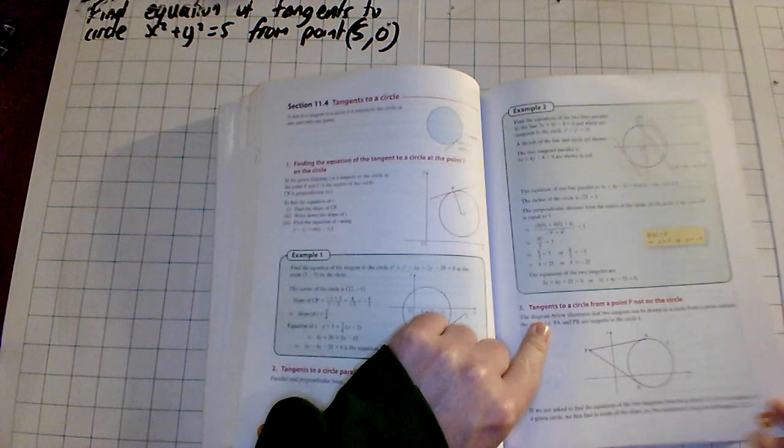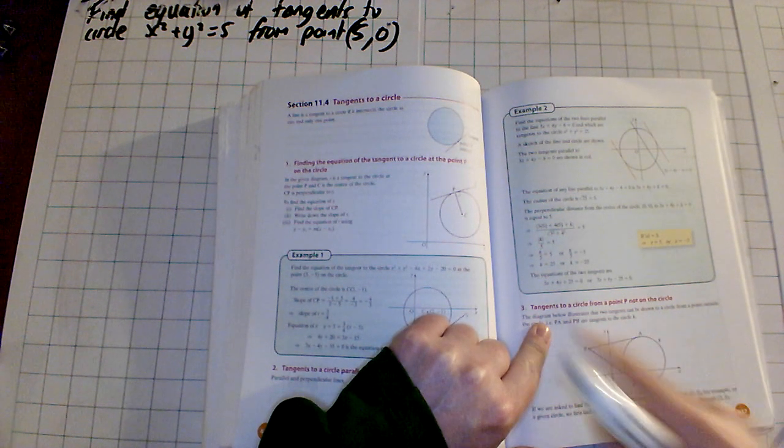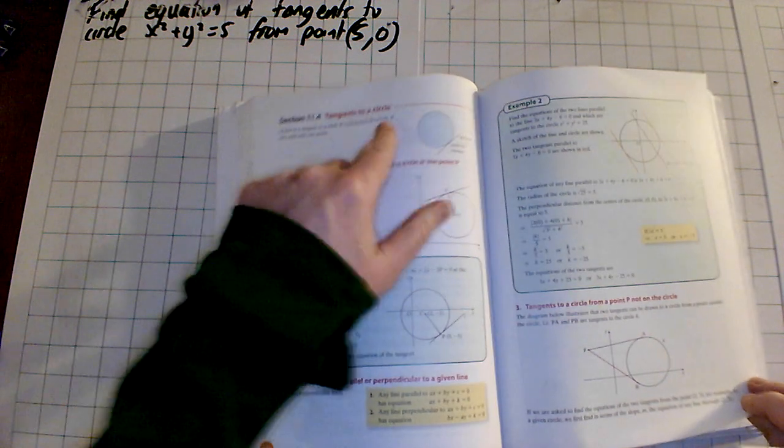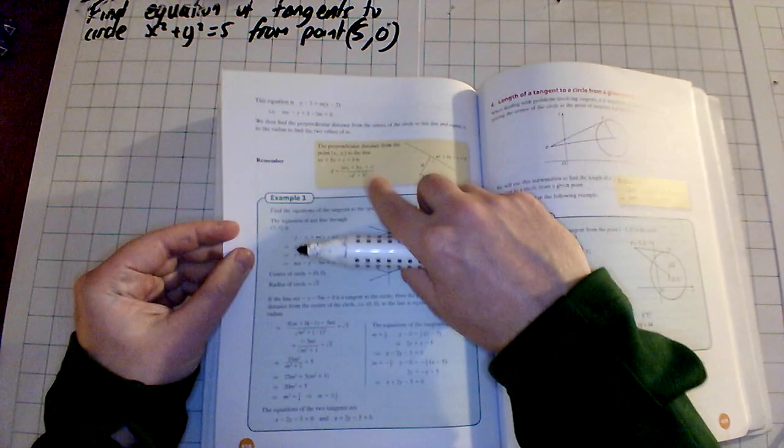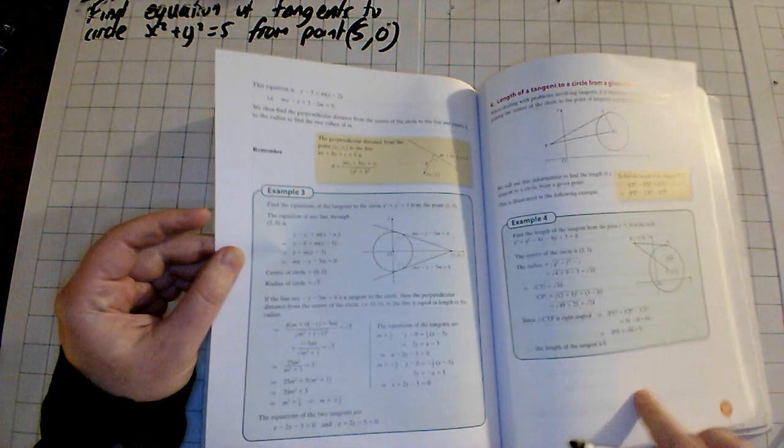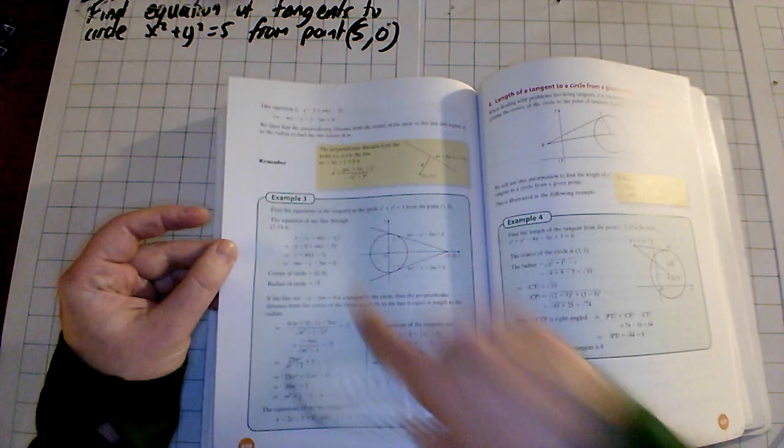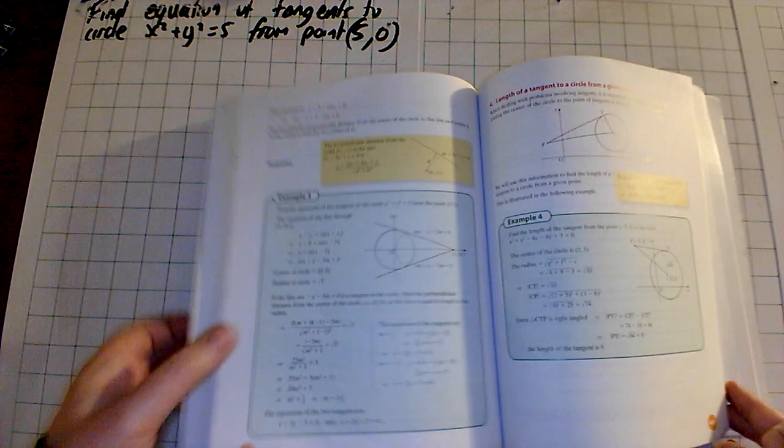So if you could take down the third subheading: tangents to a circle from a point P not on a circle. Take that down as a subheading. This is still your title and it has a yellow box here with the perpendicular distance formula on it, but we have actually taken that down before so there is no need. What I am going to do is go through this example, so take it down after you have taken down the little subheading. We will take this down and then I will give you a question similar to it to try.